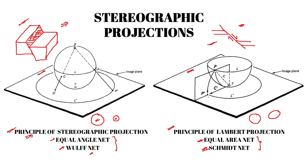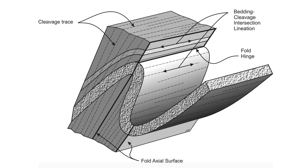So basically it depends on the requirement of your study. For our purpose — for exams like IIT JAM, GATE, NET, etc. — we can use the equal angle net, as we only have to project strike values, dip values, and plunge values, which mainly deal with angles. In this video, we will focus on the principle of stereographic projections, which is the projection seen in most questions.